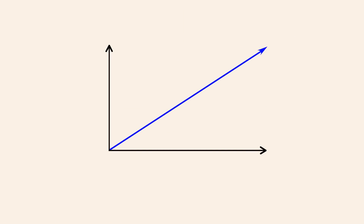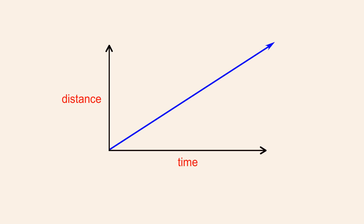Let's say that we are traveling at a constant speed of 50 kilometers per hour. We can visually represent this motion by graphing our distance from the starting point versus the elapsed time. If we graph time on the horizontal axis and distance on the vertical axis, we see that our distance increases at a constant rate. Distance is a linear function of time as long as our speed is constant. Our speed determines the slope of the graph — the greater the speed, the greater the slope.